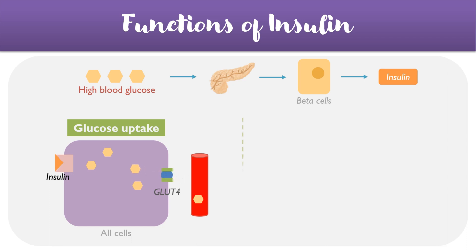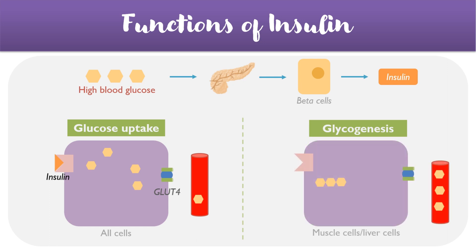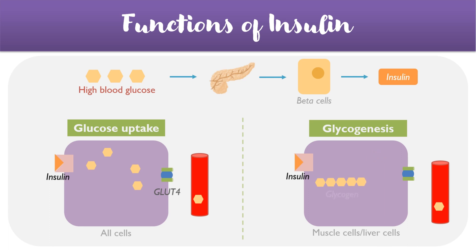Another mechanism involves increasing glycogenesis. Again, insulin binds its receptor and glucose is able to enter the cell. But this time, upon entering, the glucose fuses with other glucose molecules to form a long chain of glycogen, which is useful for glucose storage.